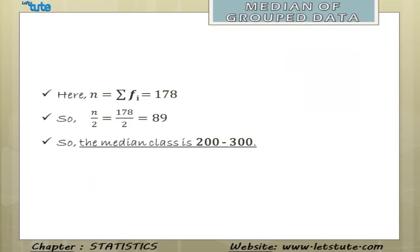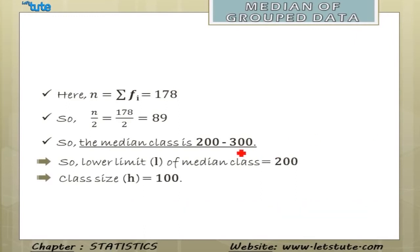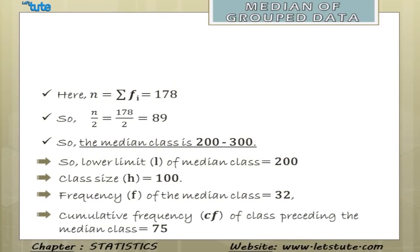Now, the lower limit of this median class is 200 denoted as L and the class size denoted as H is 100 which is nothing but the difference between upper limit and the lower limit. So, 300 minus 200 will give us 100. Frequency of this median class F is 32 and very importantly we have to keep in mind the cumulative frequency or CF of the class preceding this median class or the class that occurs just before this median class. The cumulative frequency is 75 of this class.